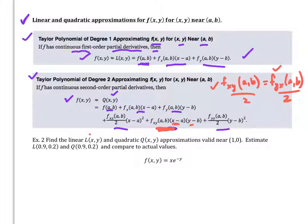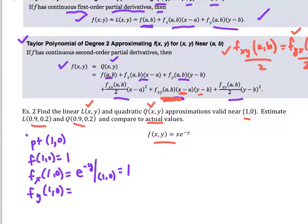Now we're going to find the linear and quadratic approximations valid near a point, and then estimate values at both and compare to the actual value to see how accurate we are. For coders and programmers, these approximation methods are what might be used when estimating functions at certain values. We need the point, the function evaluated at that point, the partial with respect to x at that point, and the partial with respect to y at that point. My partial with respect to y is x·e^(-y)·(-1), and evaluated at (1, 0) gives negative 1.